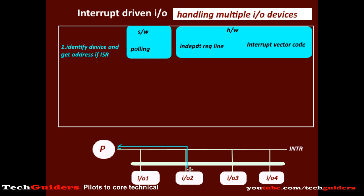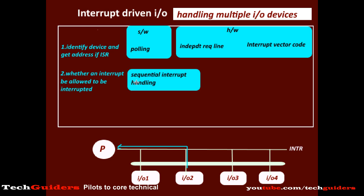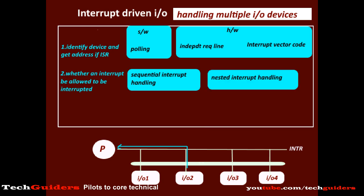Before starting to service an interrupt request, since there are multiple I/O devices, the processor must decide: while servicing an interrupt service routine for one device, there is a chance that some other device may raise an interrupt in between. In such cases, whether those other requests should be accepted or ignored — that is, whether interrupt handling should be allowed to be interrupted again or not. Either we can disable interrupts from other devices and follow a sequential interrupt handling approach, or if we wish to give importance to priority, we can allow a low-priority interrupt to be interrupted by a high-priority request, following a nested interrupt handling approach.